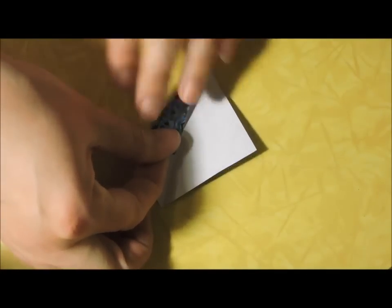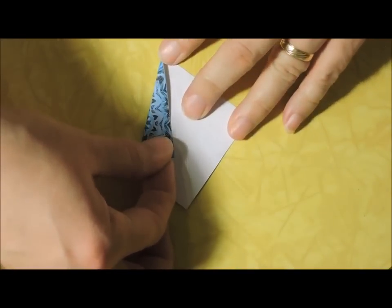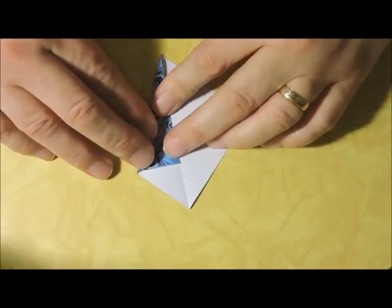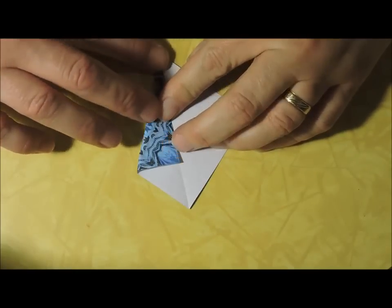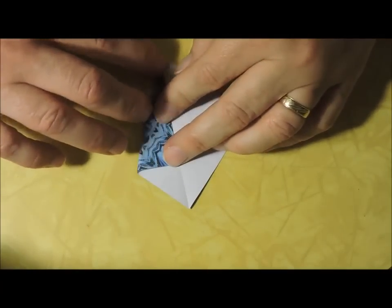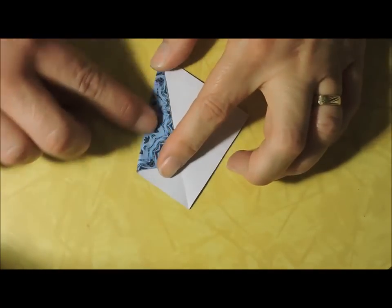The most important thing with teabag folding is first, get your tiles square, and next is the precise folding. So that goes to the center.